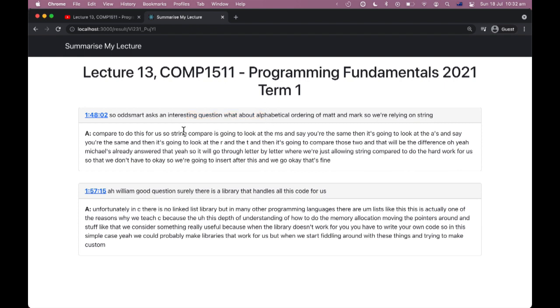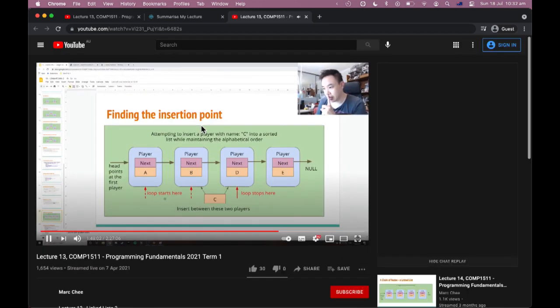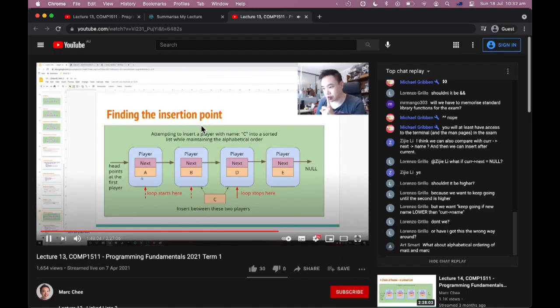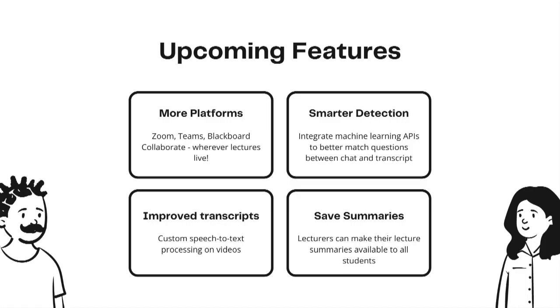This summary is where the important stuff is — it's the dynamic engagement between students and lecturers that has been distilled into this easy-to-digest Q&A. This is just a proof of concept, showing that it is possible to intelligently summarize the important Q&A aspects of a lecture.